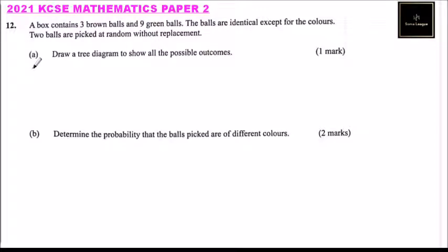Question number 12. A box contains three brown balls and nine green balls. The balls are identical except for color. Two balls are picked at random without replacement.